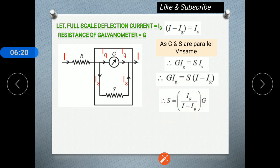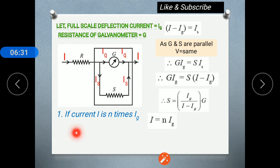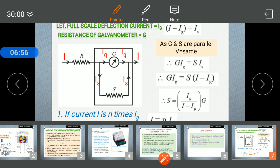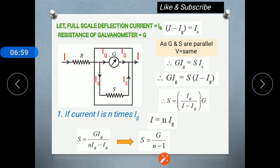There are different cases. If the current I is N times I_G — for example, I = 10 × I_G — we substitute I = N × I_G into the equation to get S = (G × I_G) / (N × I_G − I_G). Taking I_G common and cancelling, we get S = G / (N − 1). This is a shortcut formula to find the shunt resistance when the total current is N times the galvanometer's full-scale deflection current.